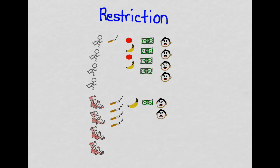One strategy for dealing with confounding is called restriction, where you limit the inclusion criteria for the study to individuals that fall within one category of a confounding variable. For example, we can restrict the study to only men — that way we won't have to worry about gender as a confounding variable. Any relationship between exposure and disease in this men-only study is not confounded by gender, but then we can't generalize the findings to women.